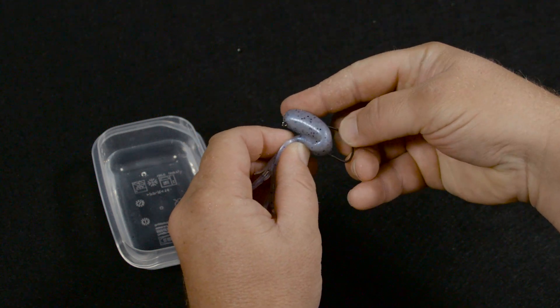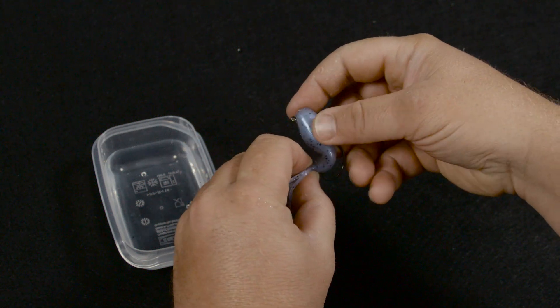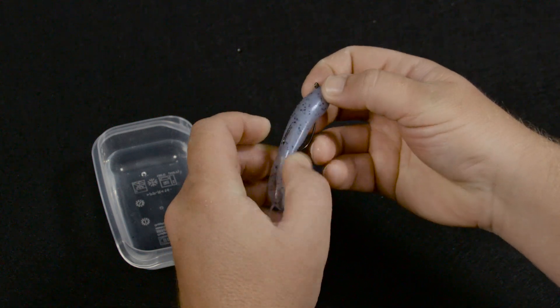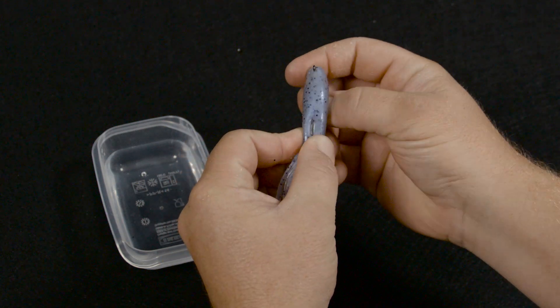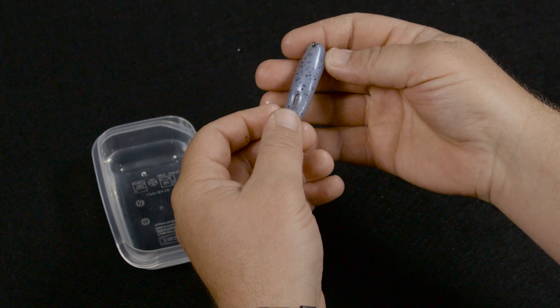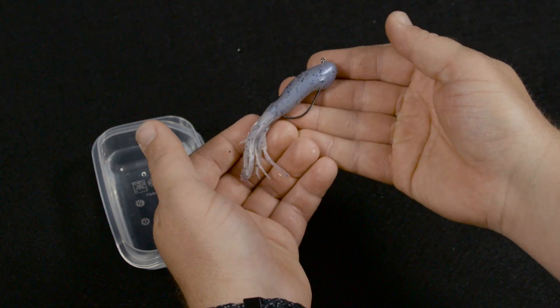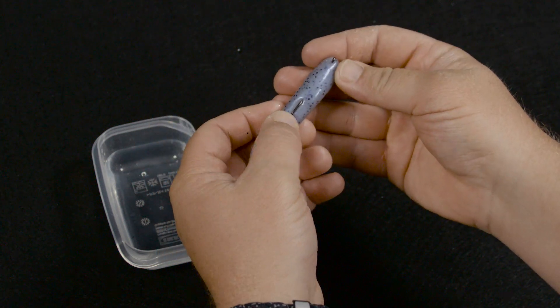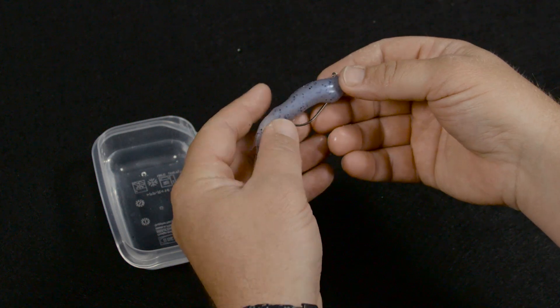All you have to do to finish it off is insert the hook point through both sides of the plastic and then just Texas pose it. Put the hook through the back. I know that looks kind of stupid - that's kind of the point of the stupid tube. It looks kind of like a peanut.